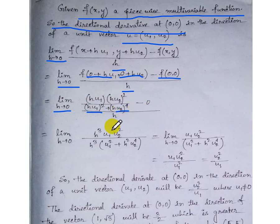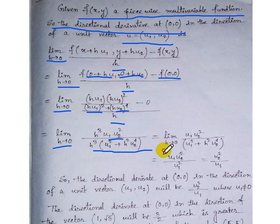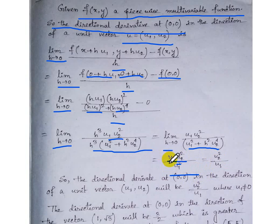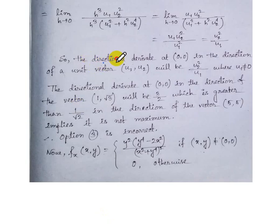Substituting into the limit: lim(h→0) of [h·u₁ · (h·u₂)²] / [(h·u₁)² + (h·u₂)⁴] divided by h. Simplifying, this gives lim(h→0) h³·u₁·u₂² / (h³·u₁² + h⁵·u₂⁴), which simplifies to u₁·u₂² / u₁² = u₂²/u₁.